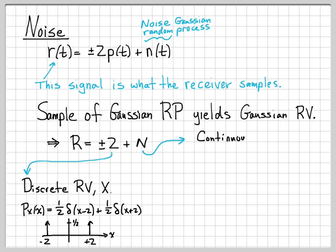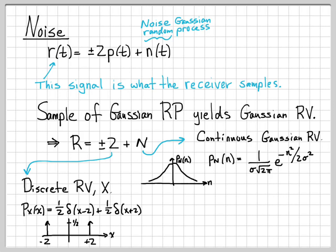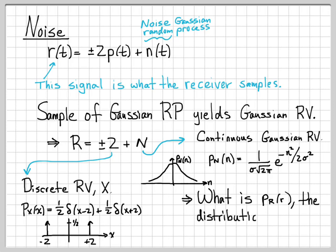The other part is a continuous random variable. We obtained N by sampling a Gaussian random process, so N is just a continuous Gaussian random variable. We know the form for that probability density function — it's the bell-shaped curve. Mathematically, it's given by 1 over sigma times the square root of 2 pi, times e to the minus n squared over 2 sigma squared. This is a zero-mean quantity and its variance, determined by sigma, controls how spread out it is.